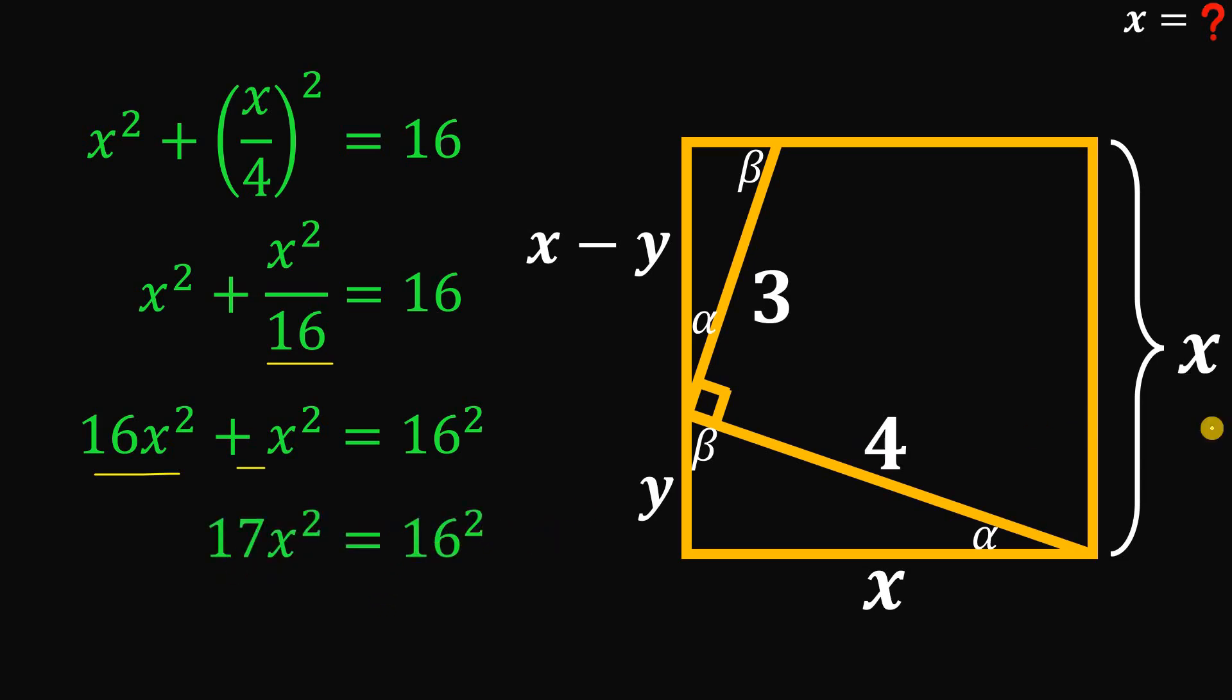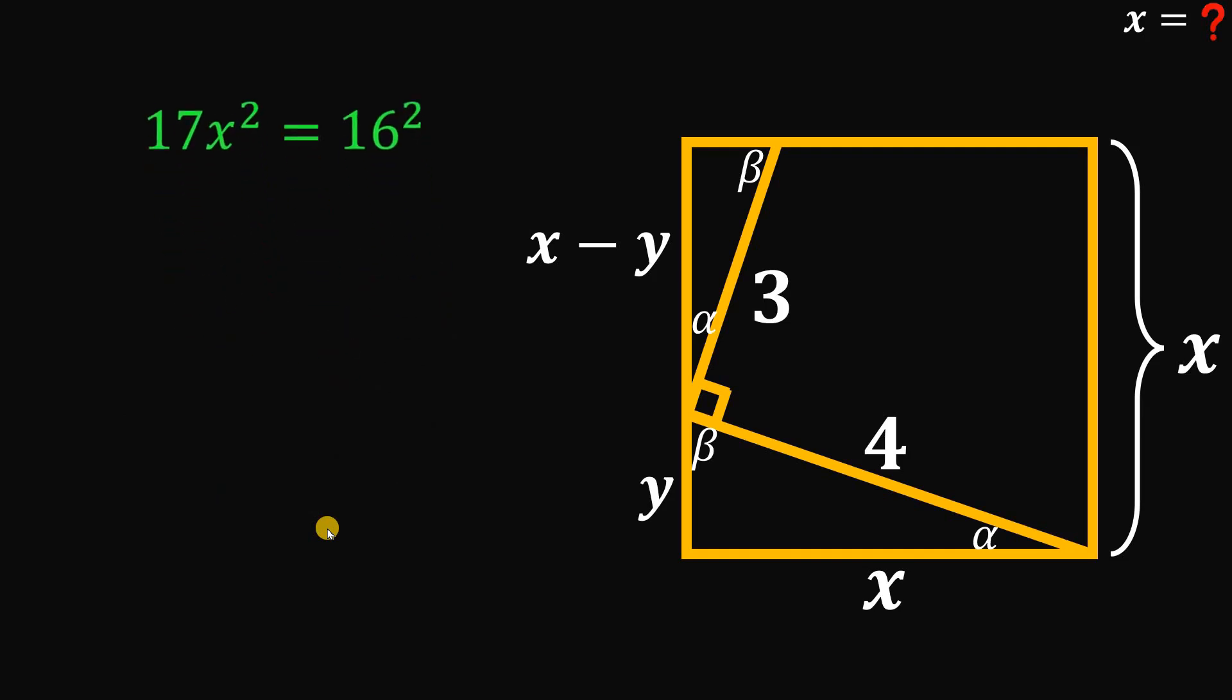Now to solve for x, because we want here the value of x or the side of the square, divide both sides by 17. And now get the square root on both sides and take note x here is a positive number. So we don't care about the negative value of x. So get the square root on both sides.